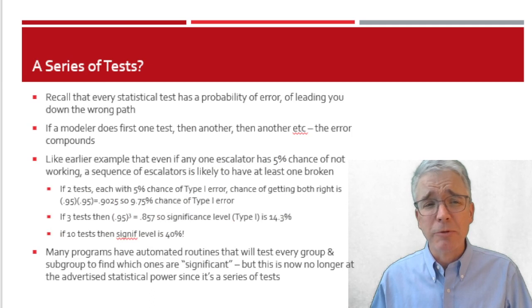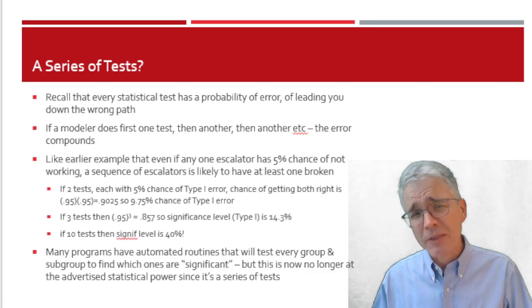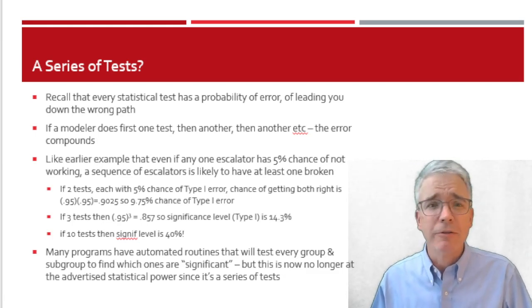Another sort of shady thing that people do is a series of tests. Every statistical test has some probability of error. Type 1 error often chosen to be 5%. That means if you do several tests in a row where the second test depends on the outcome of the first test and a third test depends on the outcome of the second test which depends on the outcome of the first test, et cetera, et cetera, then your error is going to compound.